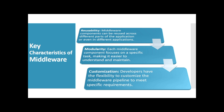Now let's talk about some key characteristics of middleware. There are three characteristics. First is reusability — middleware components can be reused across different parts of the application or even in different applications. Second is modularity — each middleware component focuses on a specific task, making it easier to understand and maintain. Third is customization — developers have the flexibility to customize the middleware pipeline to meet specific requirements.